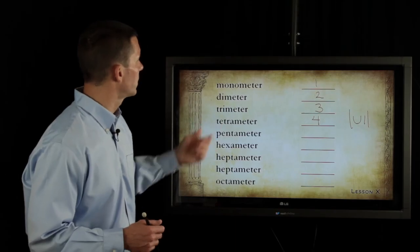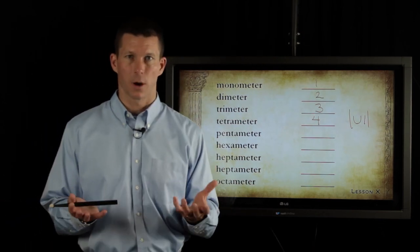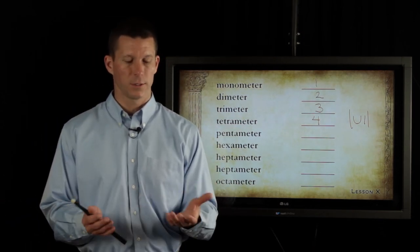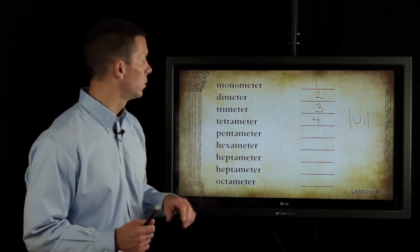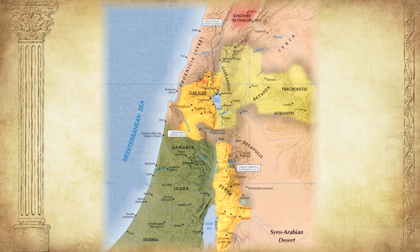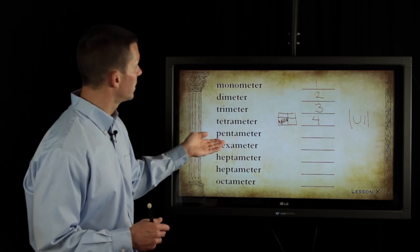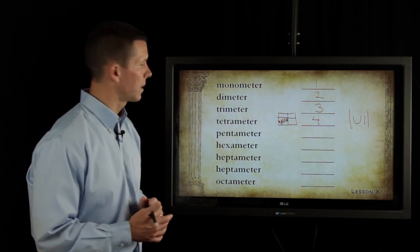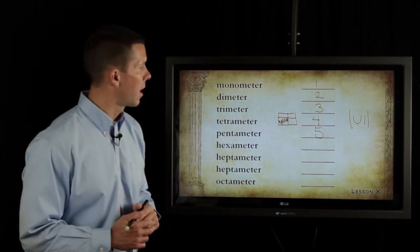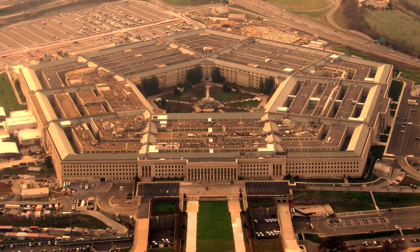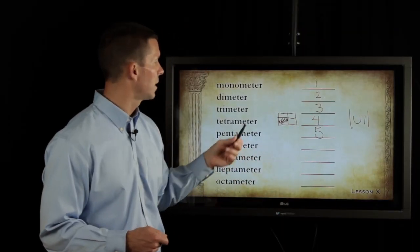For tetrameter, the thing to think through is a tetrarch. If you can remember in the New Testament, Herod the tetrarch who beheaded John the Baptist — a tetrarch is a ruler who rules over a fourth of the kingdom. So that's four feet per line. Pentameter — these get into simple geometric shapes. Pentameter is of course five feet per line, and you can think of the pentagon. There's a lot of very famous poetry written in iambic pentameter.